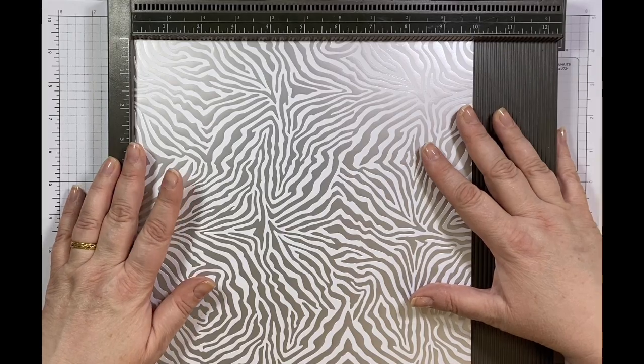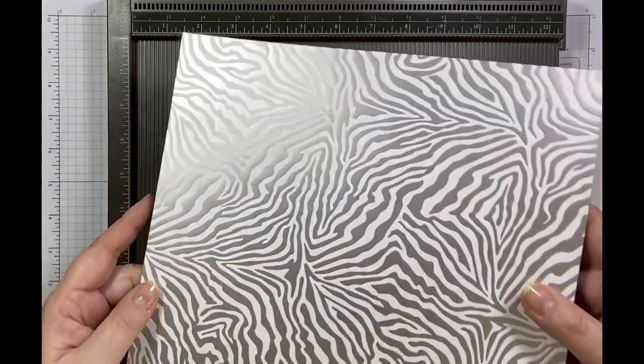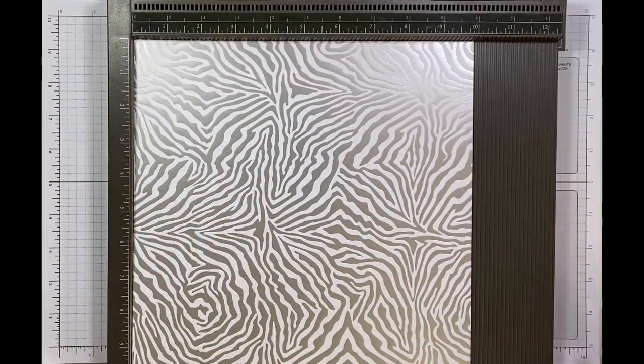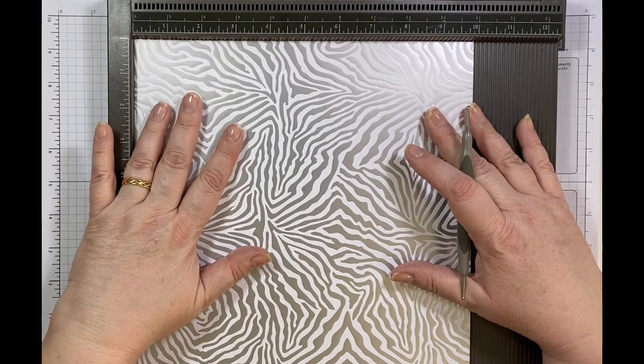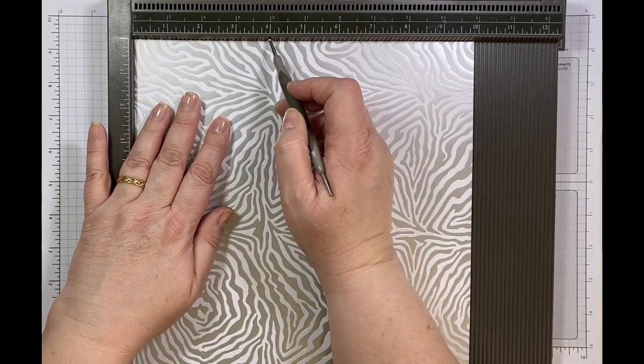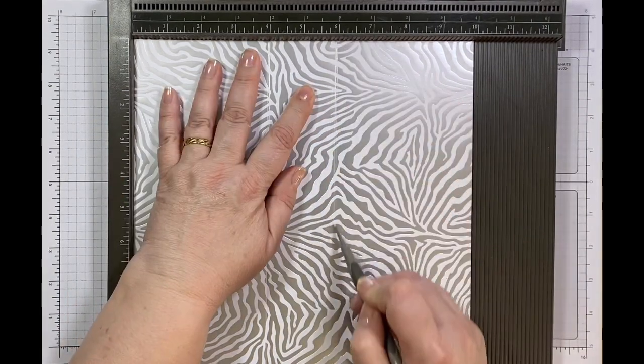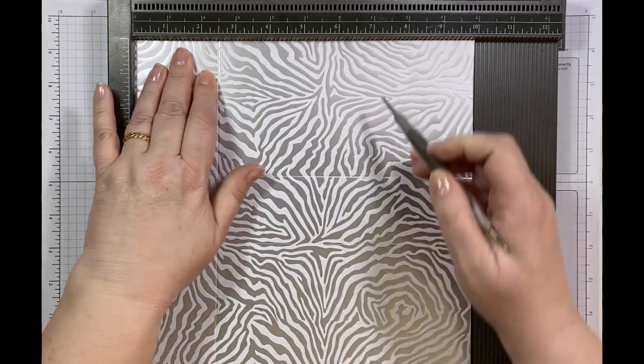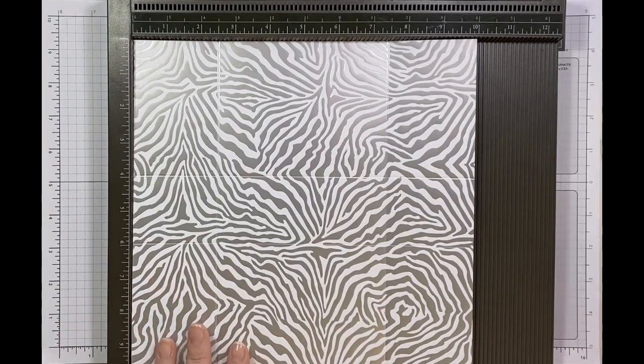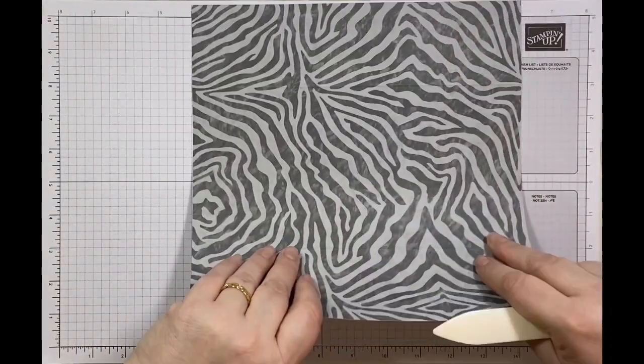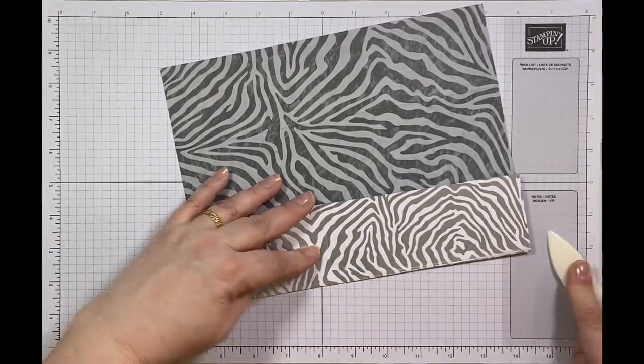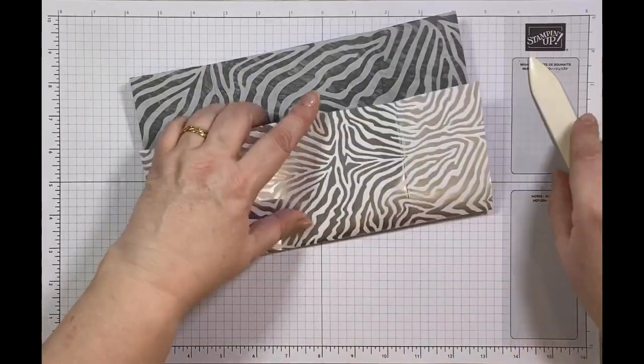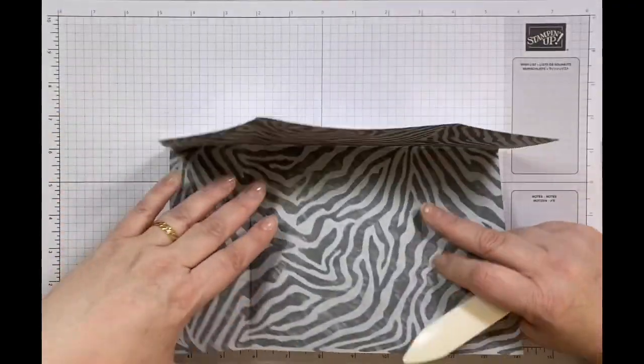This is my designer series paper and this measures 10 inches by 10 inches. It's got the beautiful silver and white and on the other side it's got some greys and blacks representing a zebra print. I will score this at 4 inches and 6 inches and then I'm going to rotate it and score it at 2.5 and 7.5. That is all the scoring, there is no cutting with this so it's great.